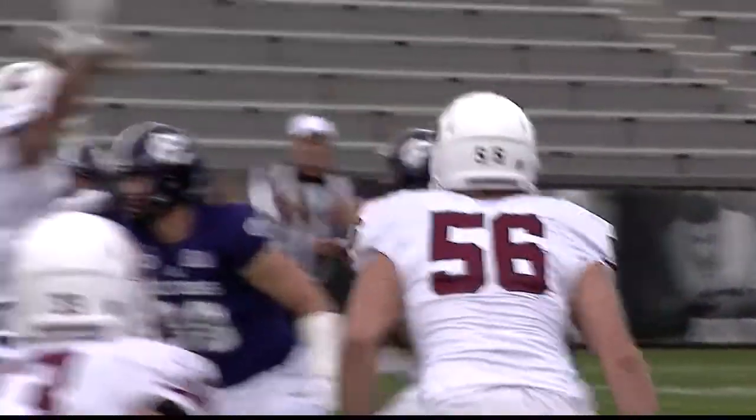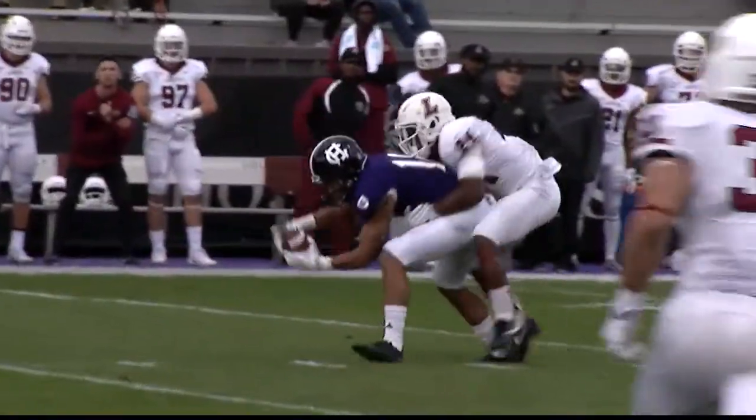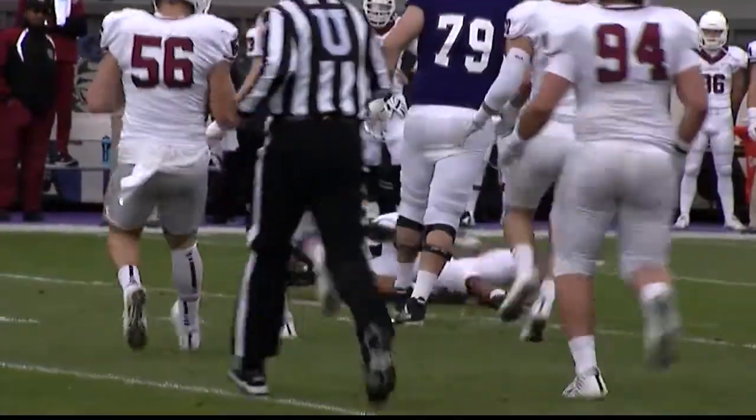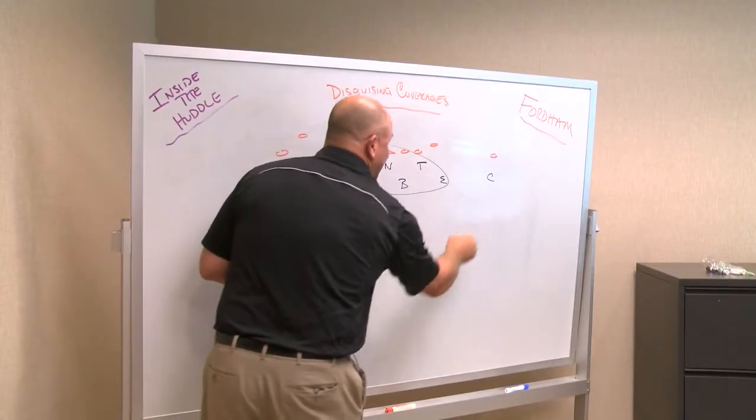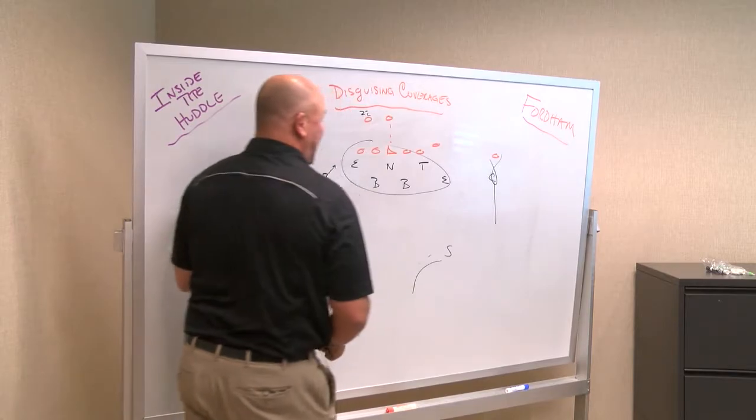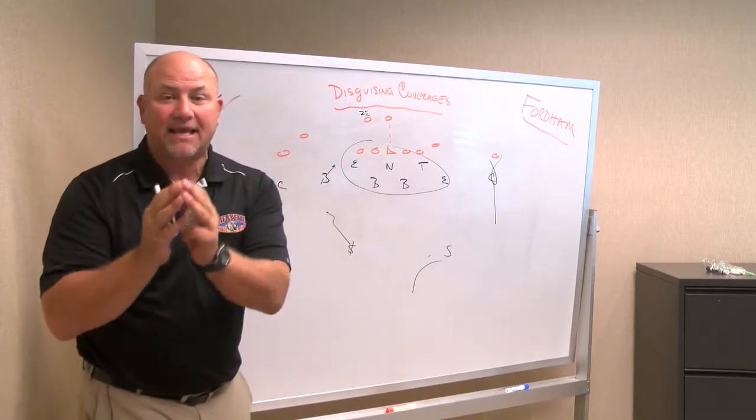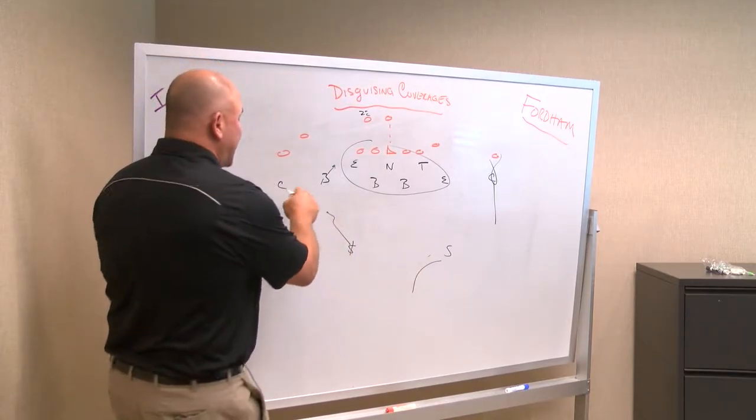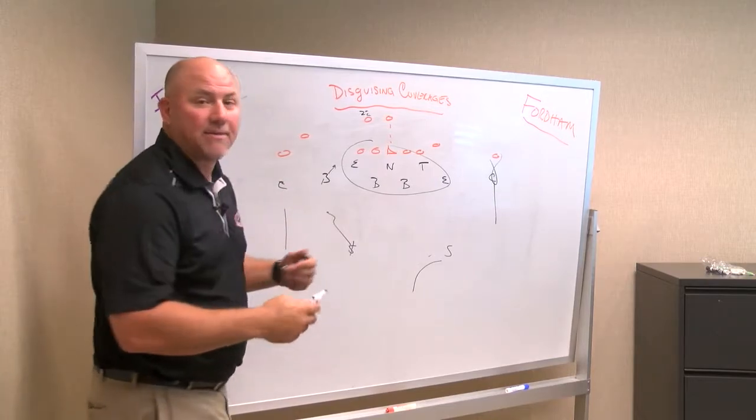Disguising coverages, that two-deep shell can give the quarterback a really easy pre-snap read. But Lafayette did a lot of rotating coverage. They locked up on the backside, allowed the quarterback to get a pre-snap read and then rotated into two-deep or three-deep coverages.